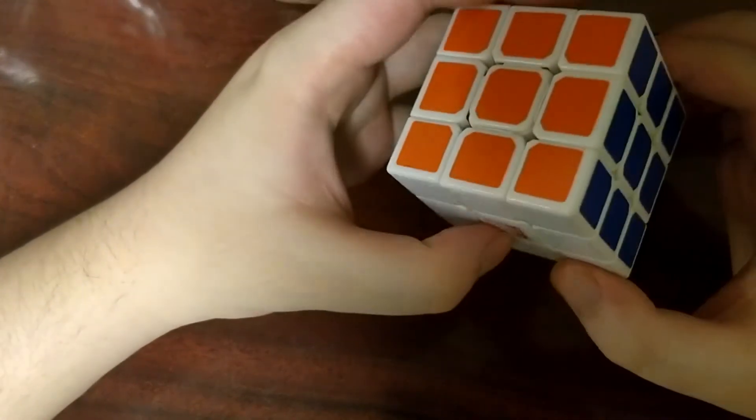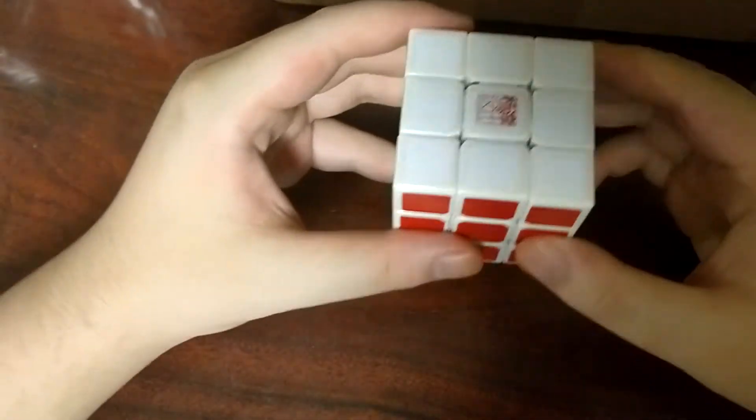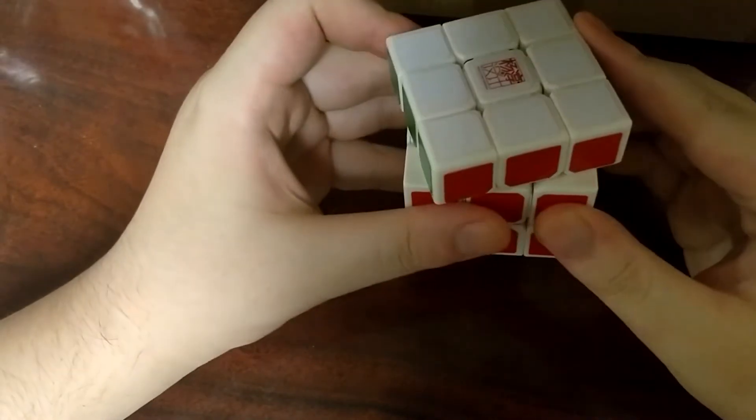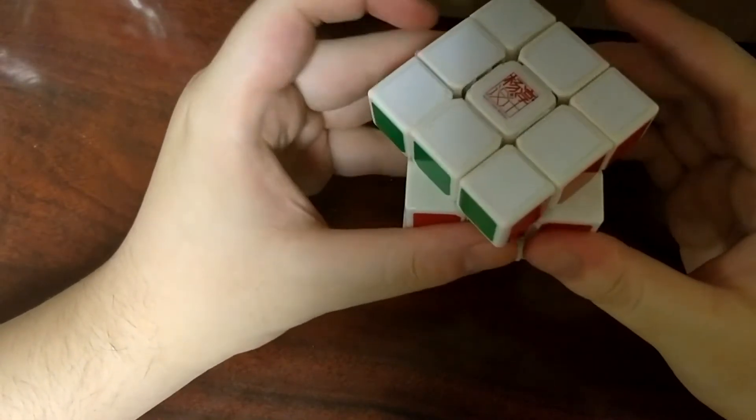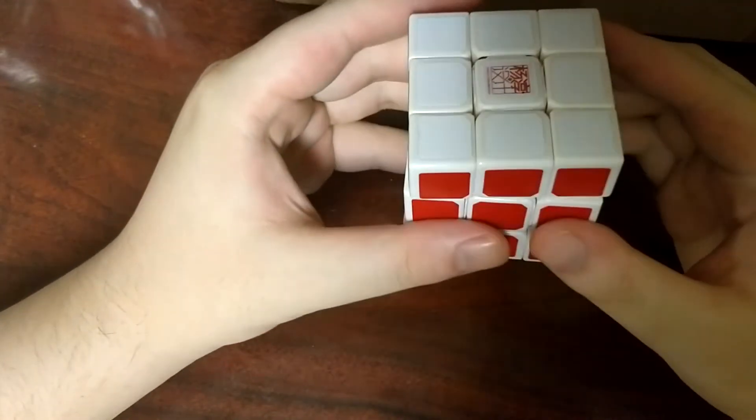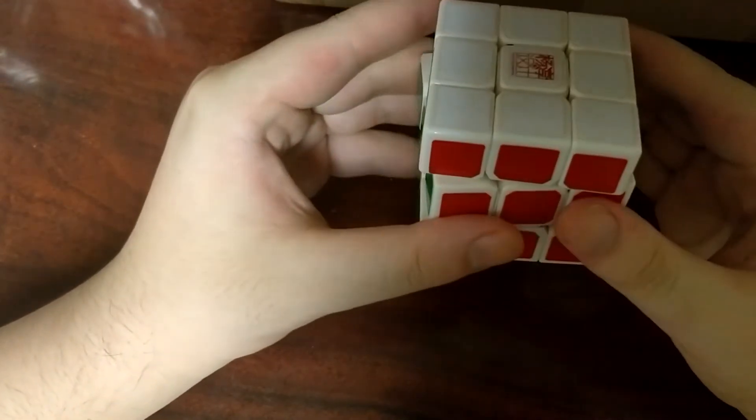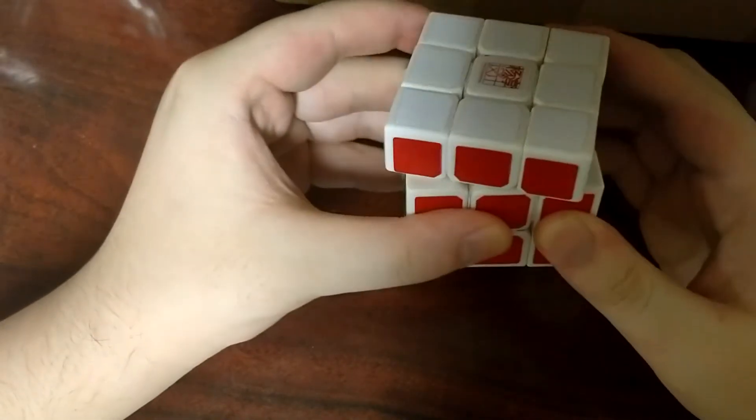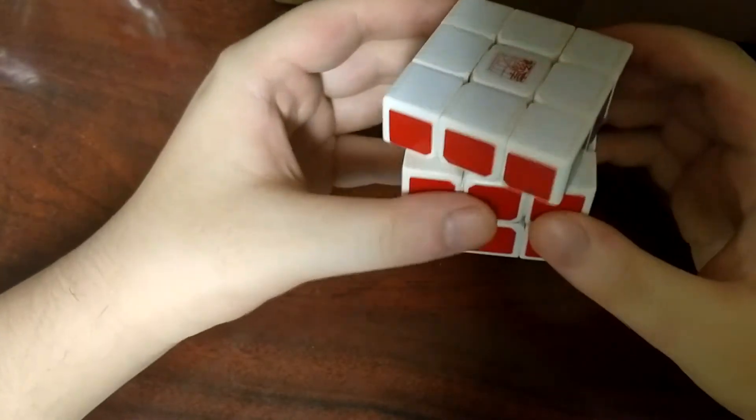But, you know, unlike a Rubik's brand, this cube can actually corner cut a little. So let's test out some corner cutting. So I can't quite do 45 degrees forward. Let's try reverse. Yeah, it barely does any reverse, but it's on very tight tensions right now.